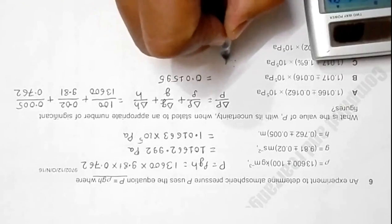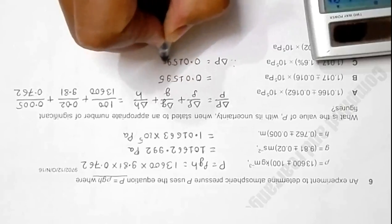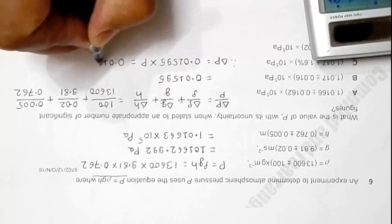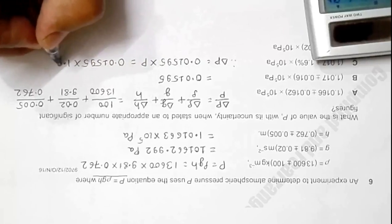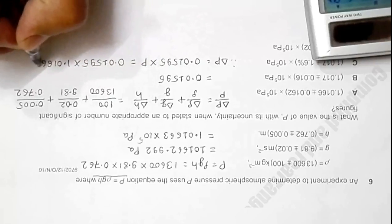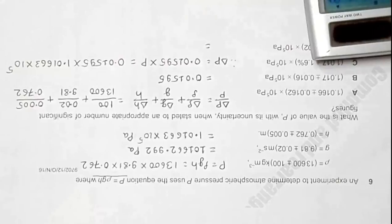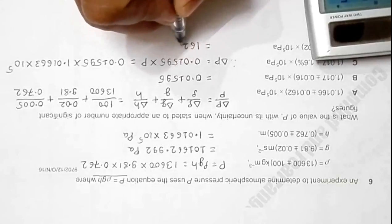Therefore, ΔP should be equal to 0.01595 into 1.01663 times 10 to the power 5. That equals 1.01663 exponent 5, which is simply 1622.866.